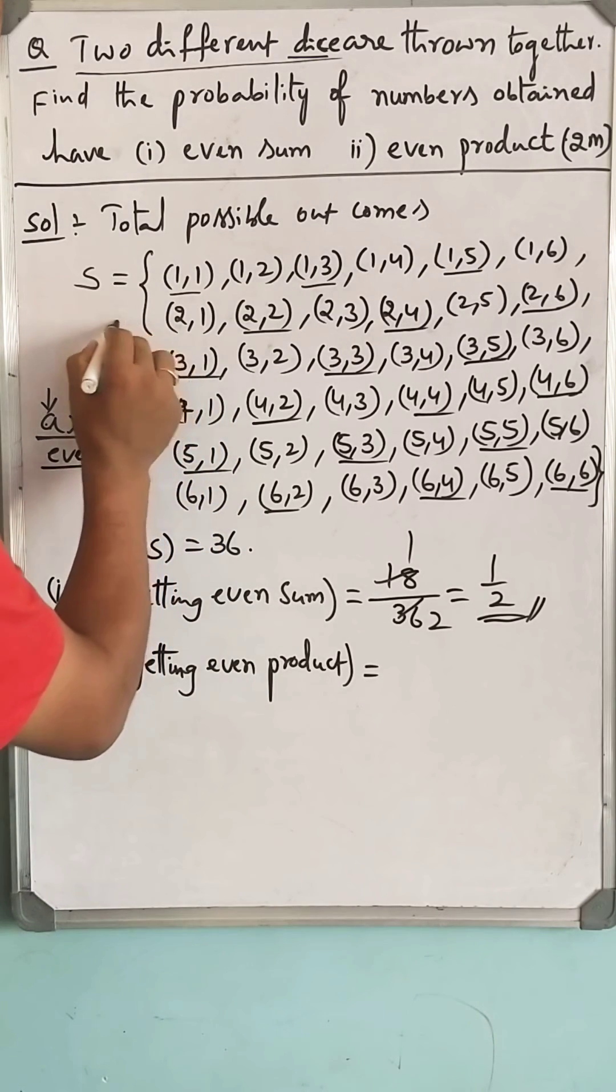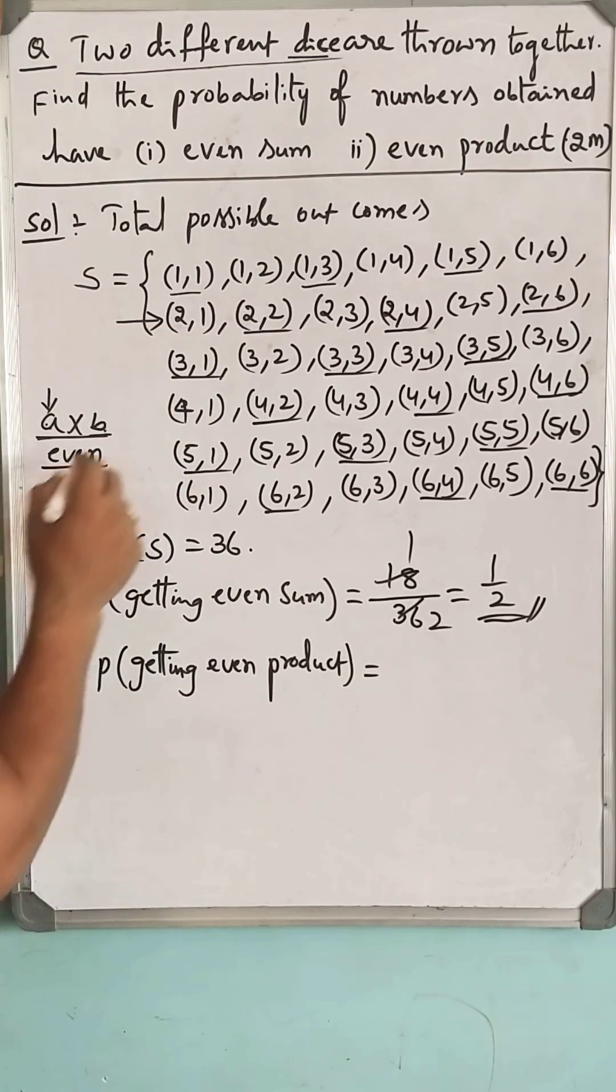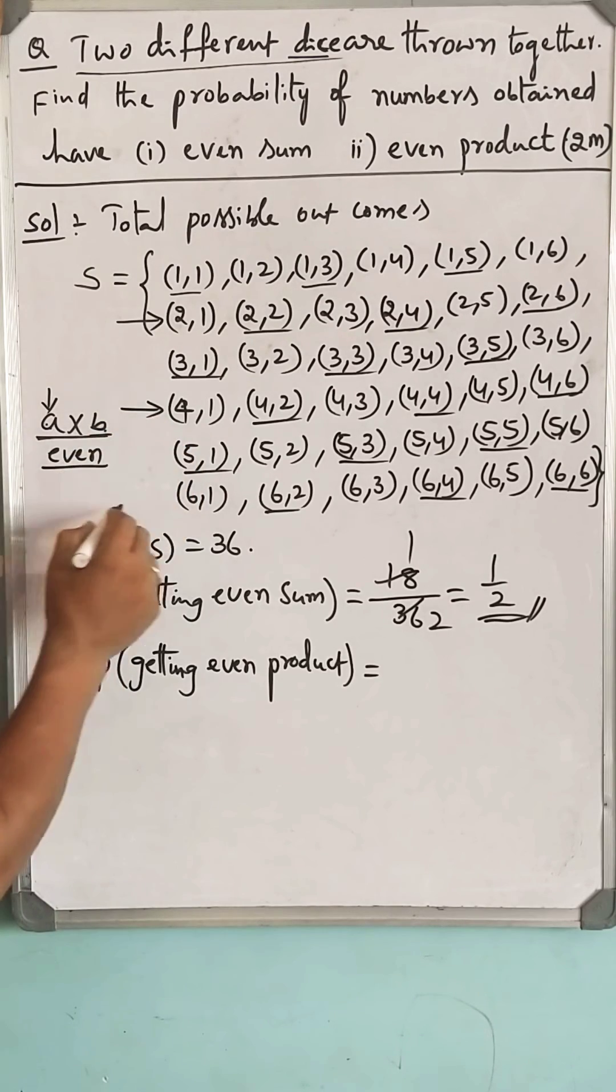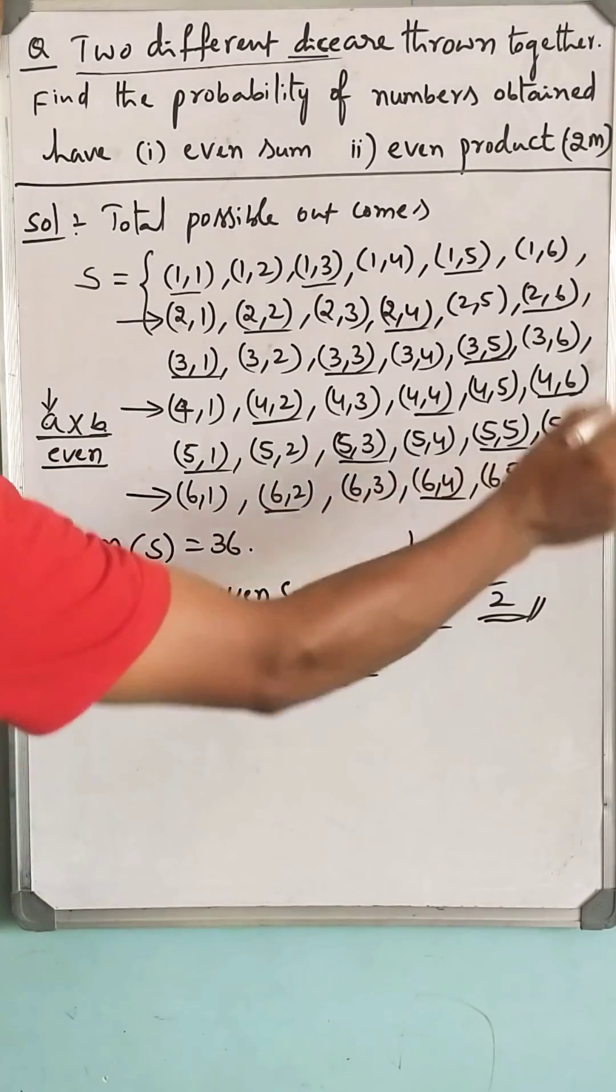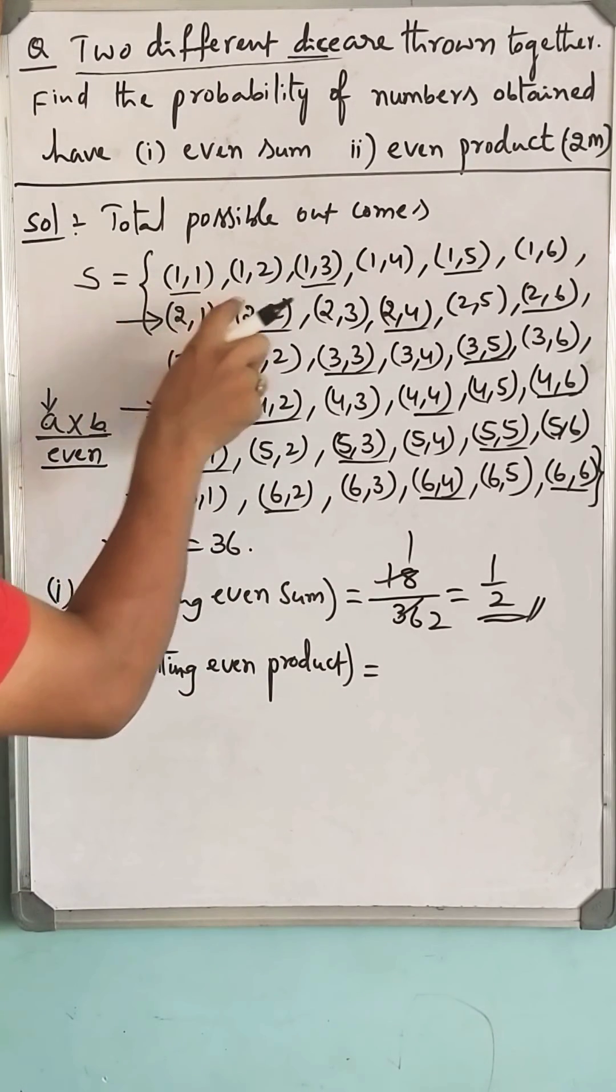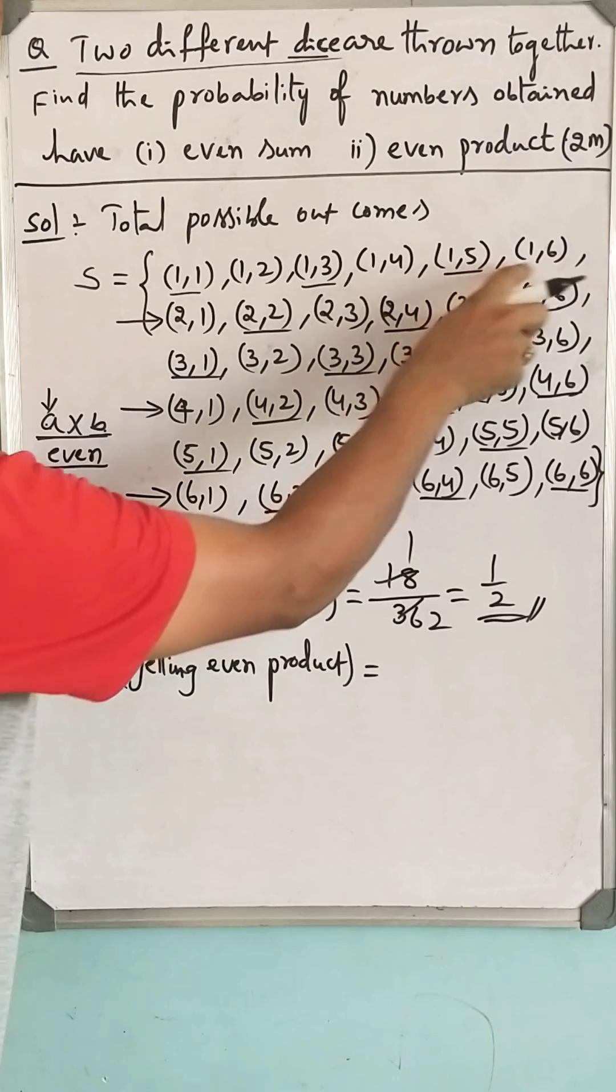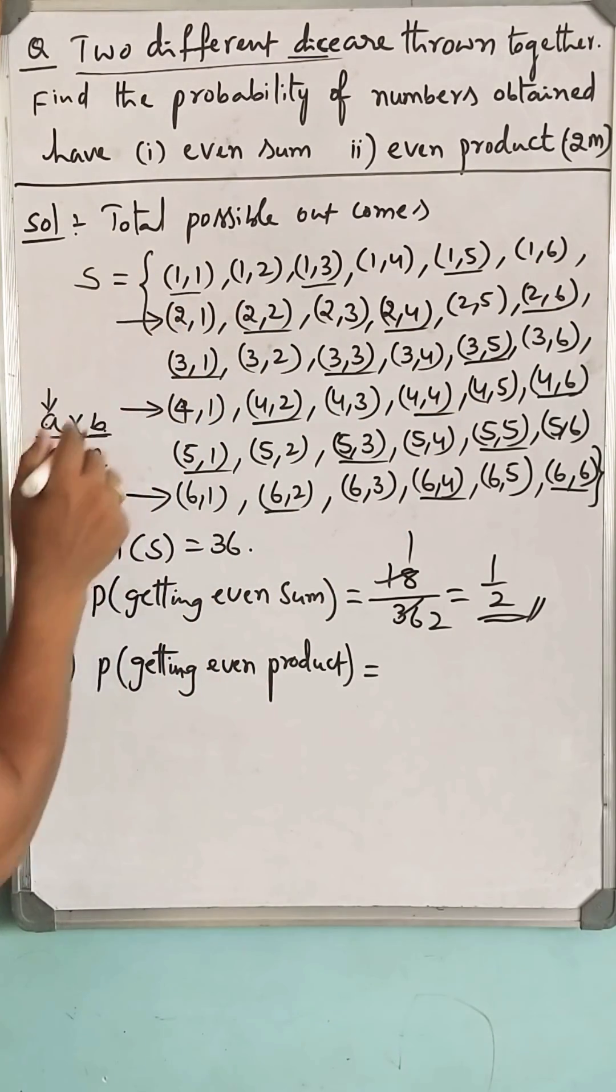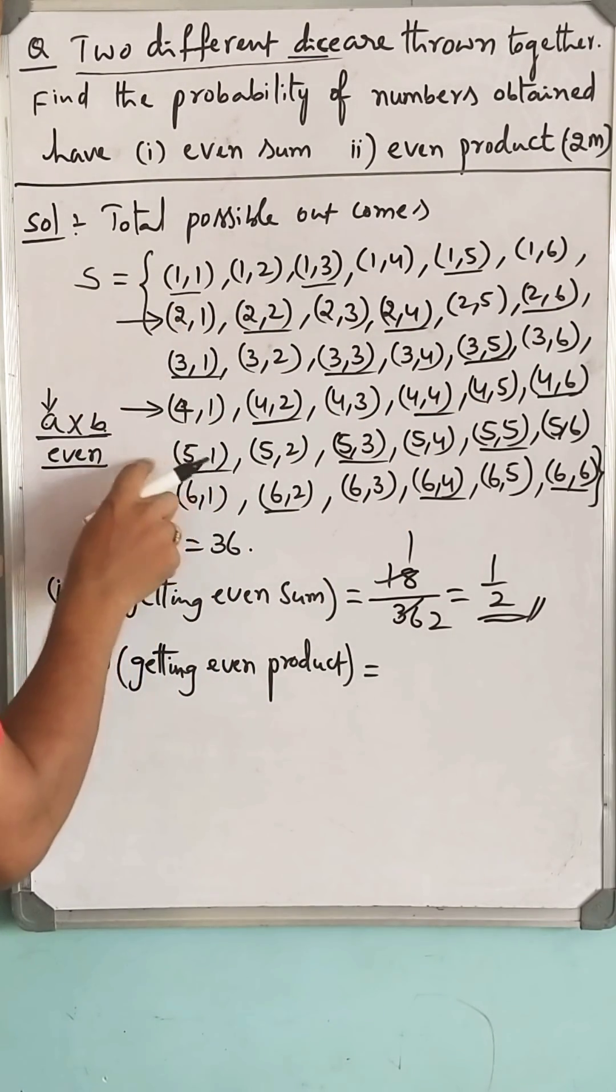See, all are even products. Here also all are even products. In this row all are even products because there is one even number. In remaining rows also, 1, 2, 3 even numbers, there are 3, here also 3, here also 3.